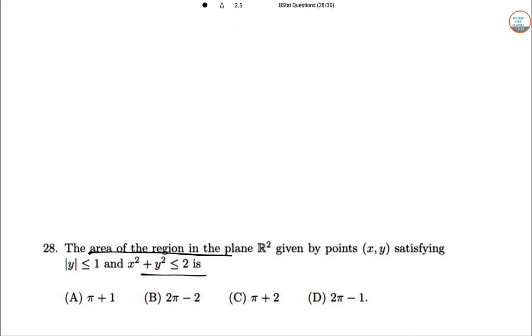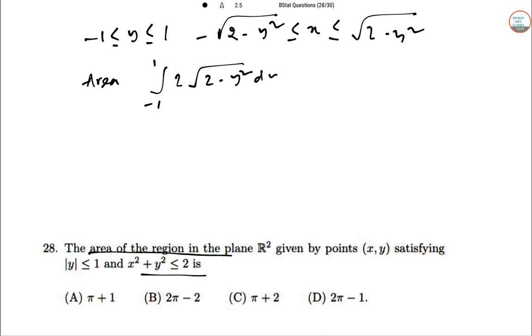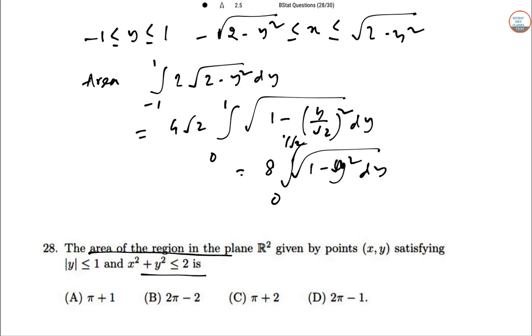The parameterized region will be given as -√(2 - Y²) ≤ X ≤ √(2 - Y²). So the area is 4√2 ∫₀¹ (1 - Y²/√2)² dY = 8∫₀^(1/√2) (1 - Y²)√Y dY.